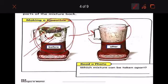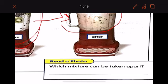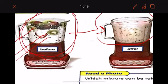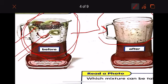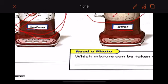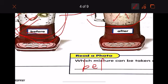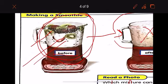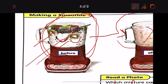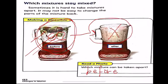So let's read a photo. Which mixture can be taken apart? Is it the before or the after? Which mixture could we take the parts or separate? Is it before or after? Hmm. I think the after. Can we separate? No, we can't. So it is before. Before. Let's write before. Okay? So I can separate this mixture. I can take out the kiwi, the strawberry, and the milk. So I separate it. Alright?